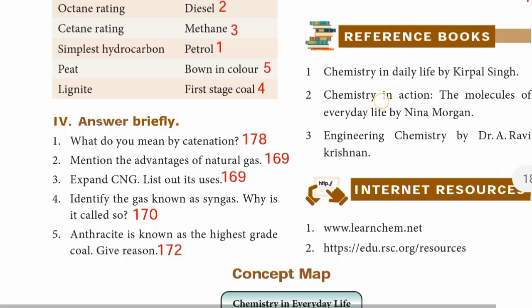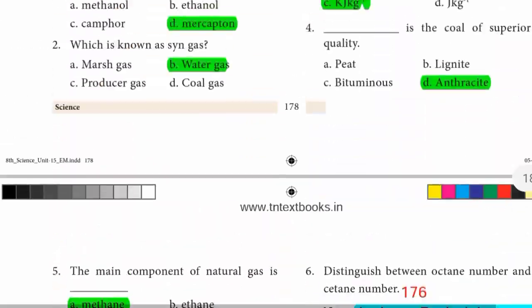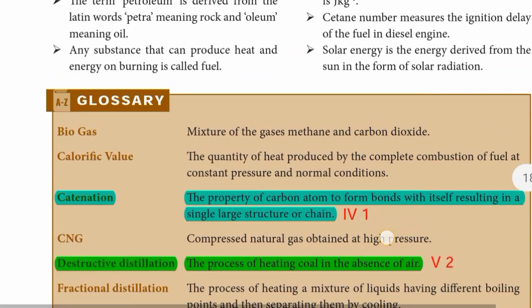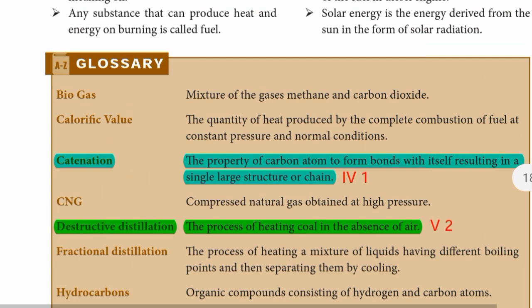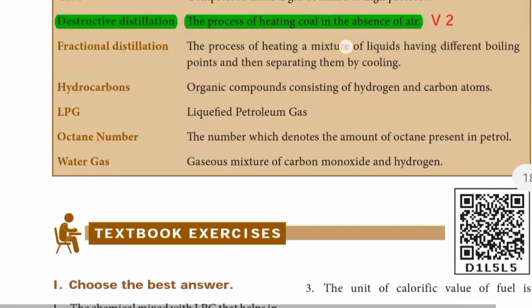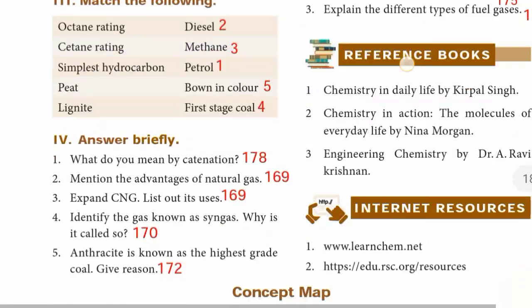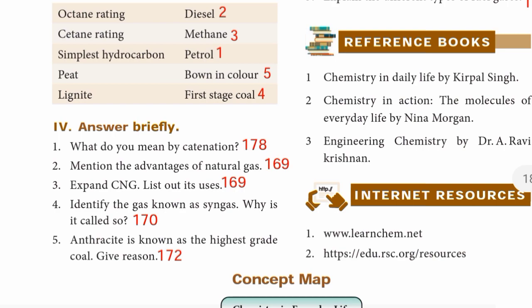Roman number four — Answer briefly. First one: What do you mean by catenation? Page 178 glossary. Catenation is the property of carbon atom to form bonds with itself, resulting in a single large structure of chain.